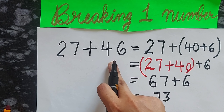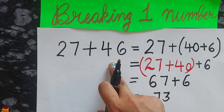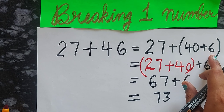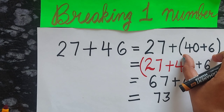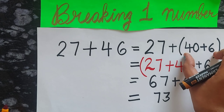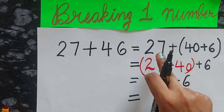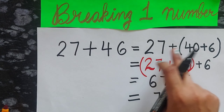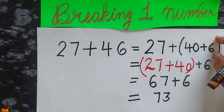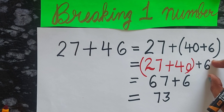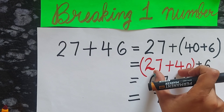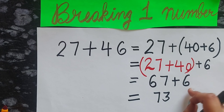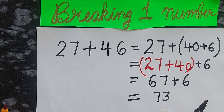So you have to break only one number. In this example, 46 is the number we broke — 40 you write separately and 6 you write separately. This is called breaking one number. You pick the bigger number in a bracket and the smaller number outside, then add both. It becomes 67, and adding 6 gives the answer 73.